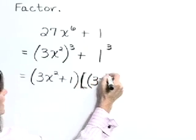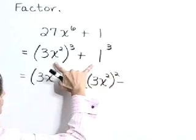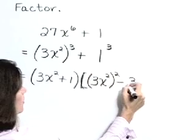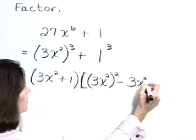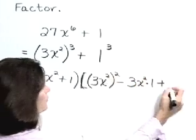write this as 3x squared quantity squared minus the product of our terms, 3x squared times one, and plus that last term,